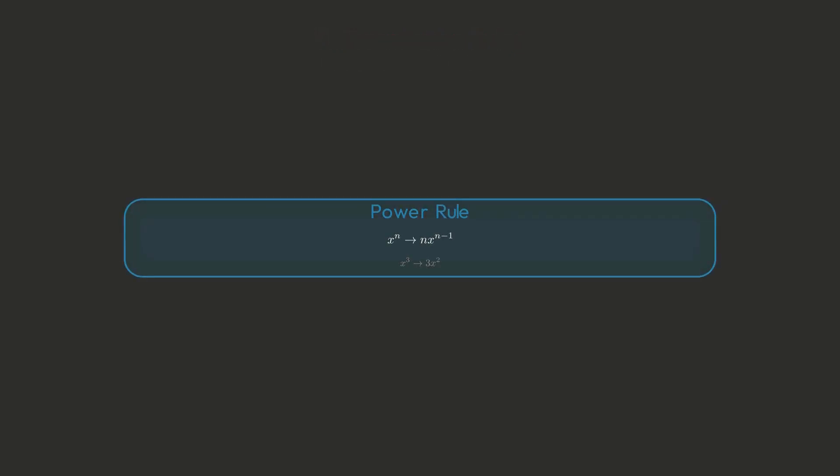Now that you understand the concept, here are the shortcut rules. The power rule: if f of x equals x to the n, then f prime of x equals nx to the n minus 1. So x cubed becomes 3x squared, x to the 4 becomes 4x cubed.